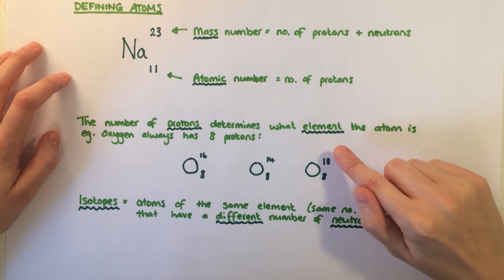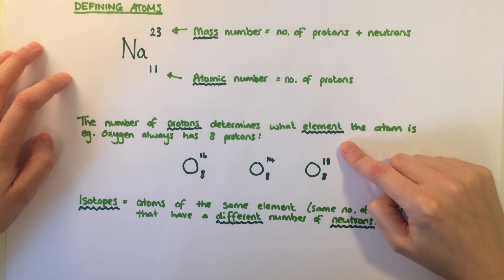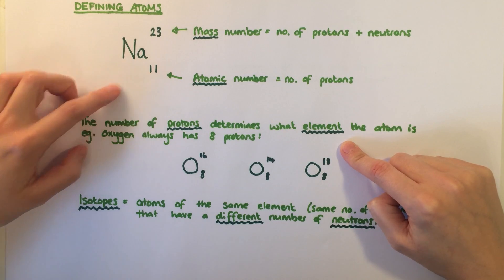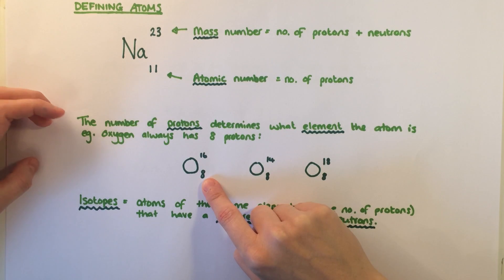It is the number of protons that determines what element the atom is. For example, if an atom has 11 protons it will be sodium. If an atom has eight protons it is oxygen.